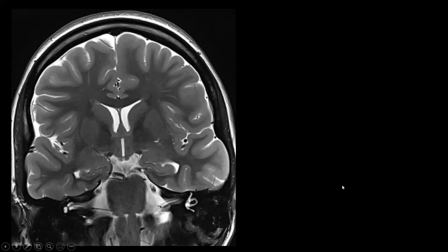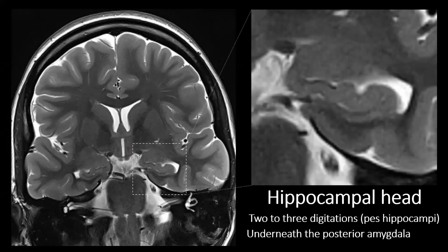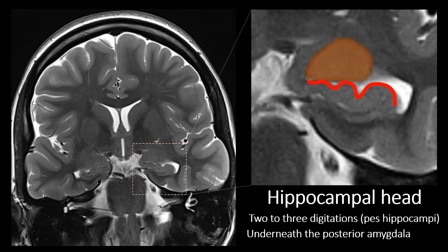In a coronal T2-weighted image centered at the level of the hippocampal head, we can recognize the hippocampal head by two or three small digitations called the pes hippocampi or hippocampal feet. On top of the hippocampal head, we see part of the uncus and a lot of gray matter — this is the posterior part of the amygdala. The amygdala is also part of the limbic system and plays an important role in emotion regulation and processing, especially fear.